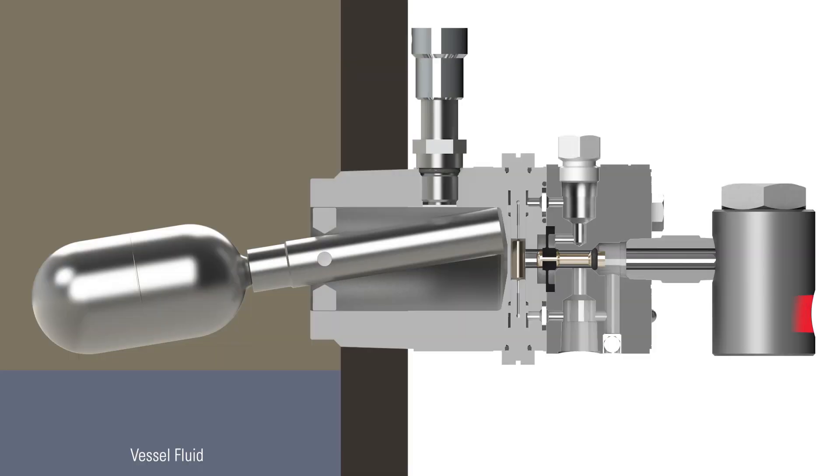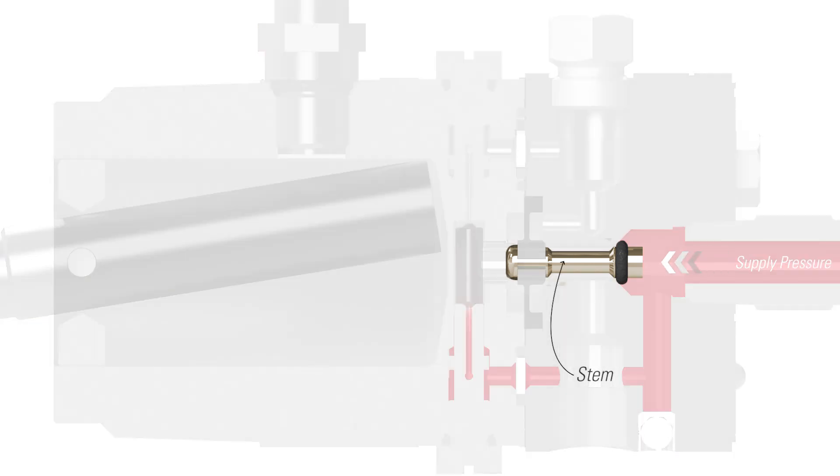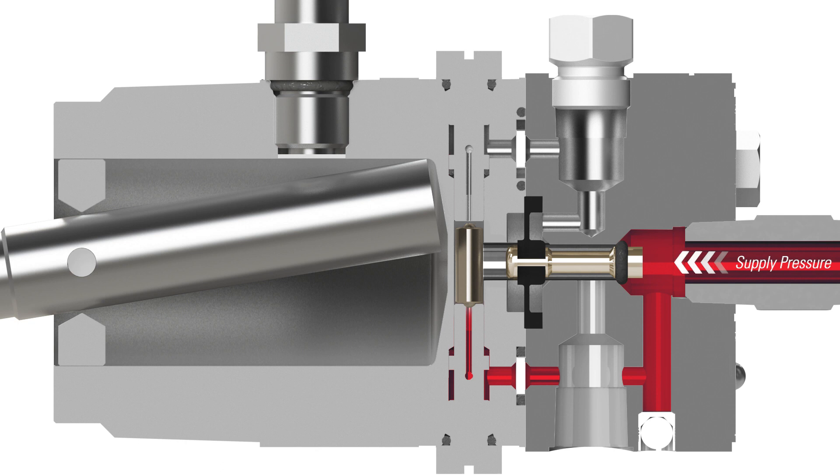Supply pressure comes in through the filter into the pilot body creating a force on the stem keeping it closed. The float lever is magnetically opposed to the magnet in the shuttle which has a check ball on the top and bottom to seal off the flow in either direction.